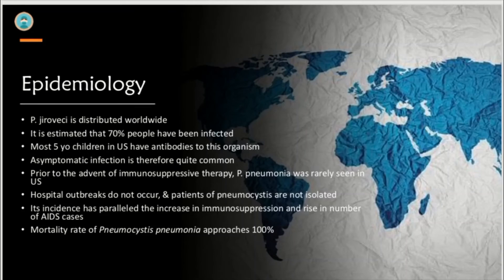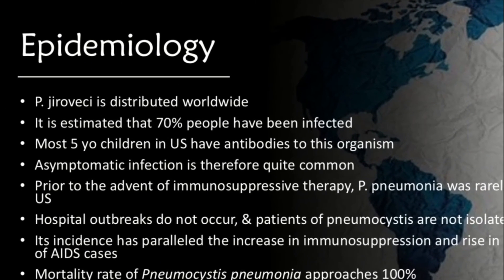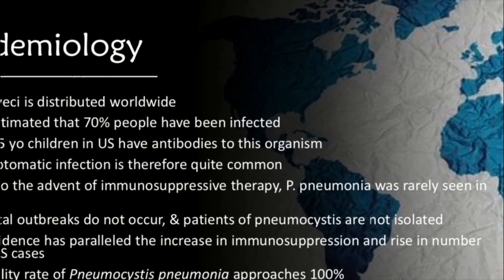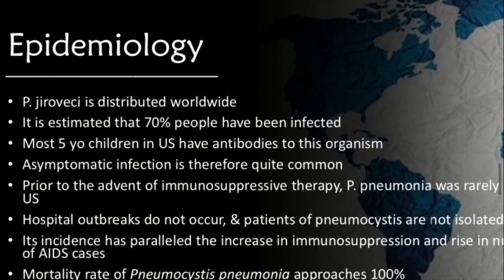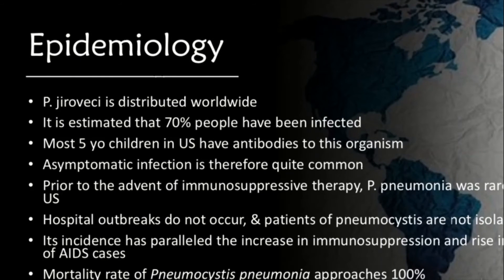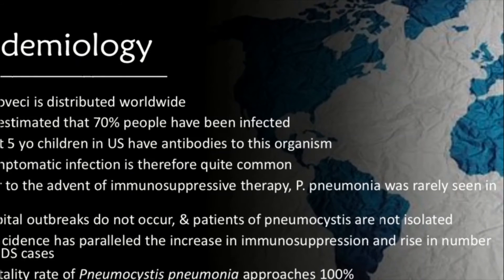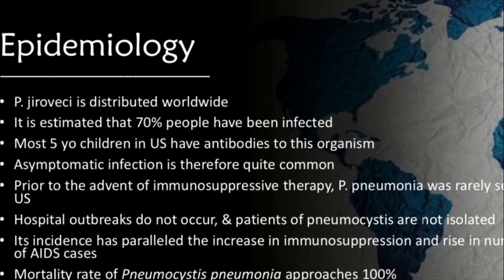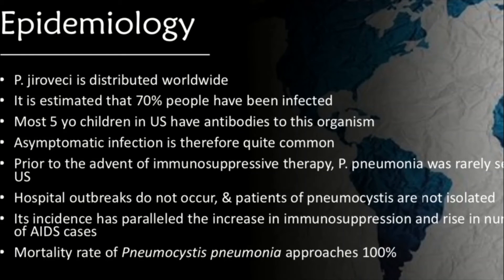Epidemiology: Pneumocystis jirovecii is distributed worldwide. It is estimated that 70% of people have been infected. Most 5-year-old children in the US have antibodies to this organism, so asymptomatic infection is quite common. Prior to the advent of immunosuppressive therapy, Pneumocystis pneumonia was rarely seen in the US. Hospital outbreaks do not occur and patients with Pneumocystis are not isolated. Its incidence has paralleled the increase in immunosuppression and the rise in the number of AIDS cases. Mortality rate of Pneumocystis pneumonia approaches 100%.